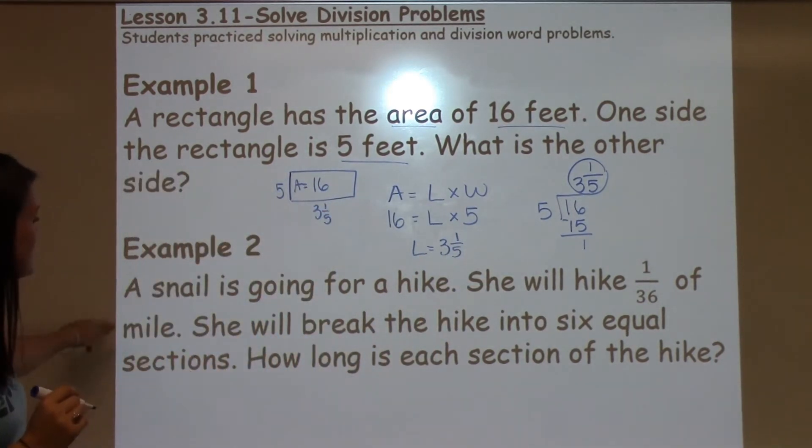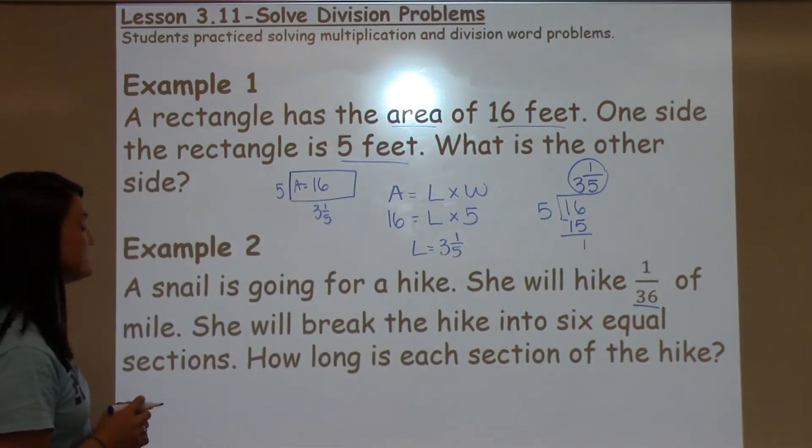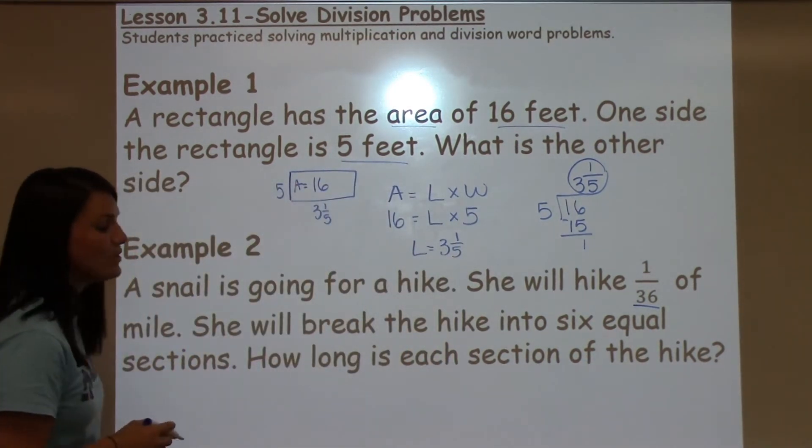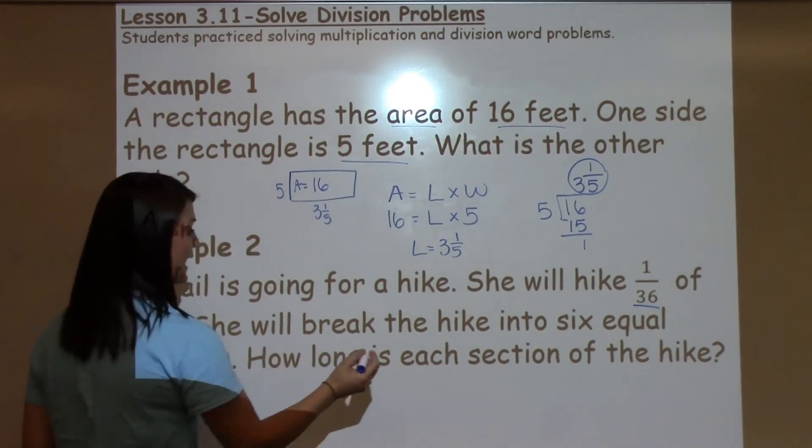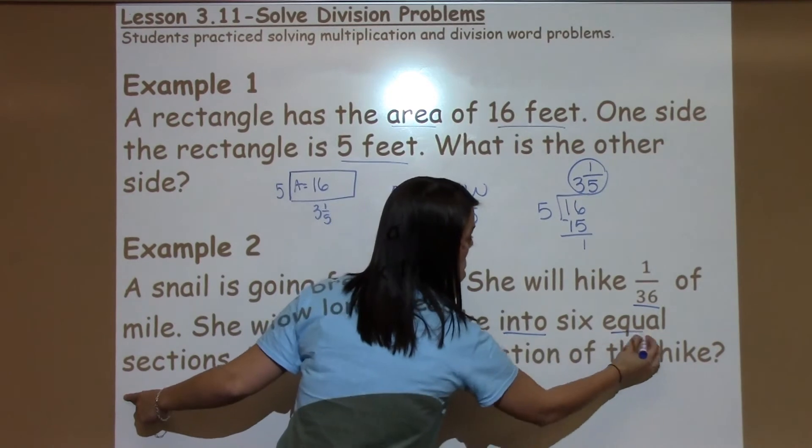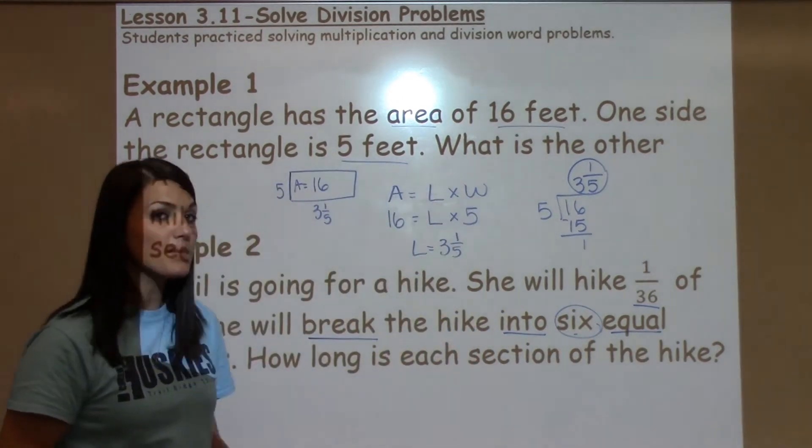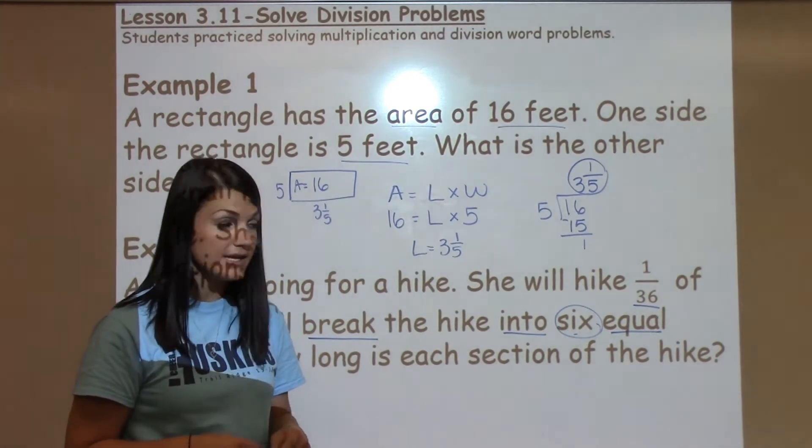In example 2, it says a snail is going for a hike. She will hike 1/36th of a mile and she will break the hike into 6 equal sections. How long is each section of the hike? So the key words here is break into equal sections. The problem never comes out and says to divide.